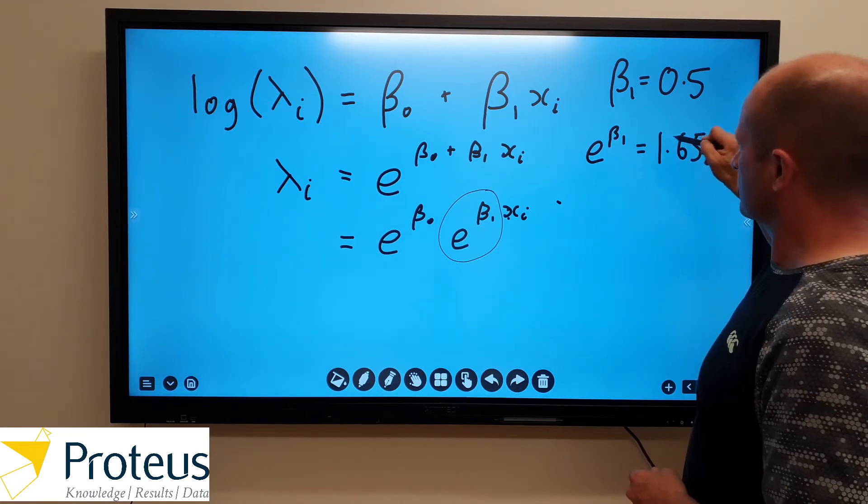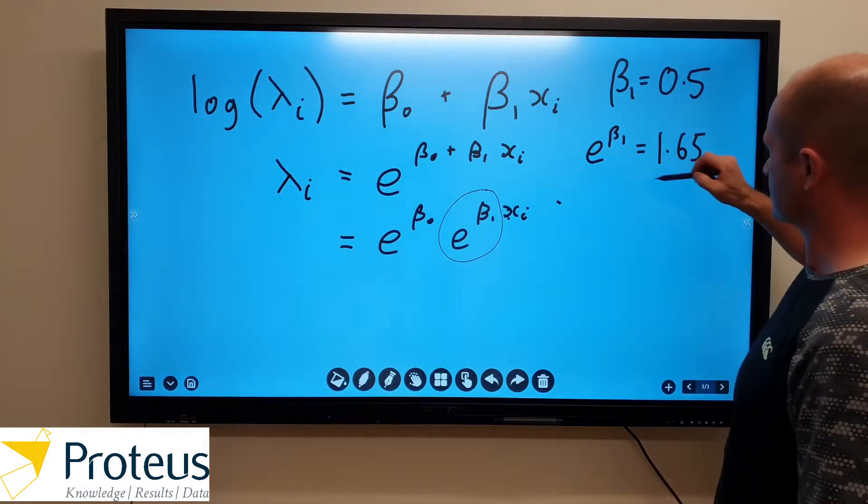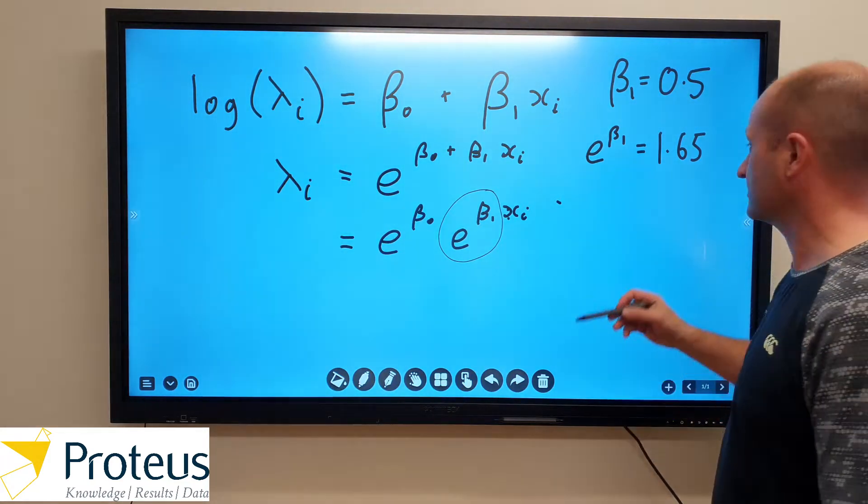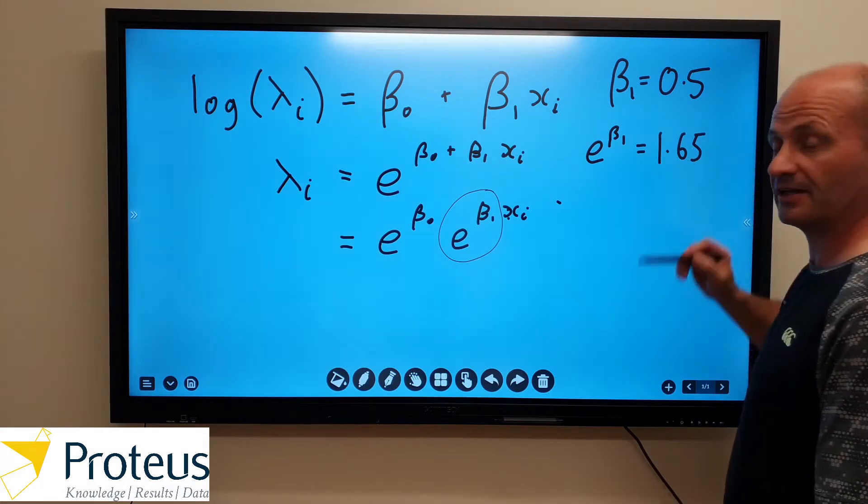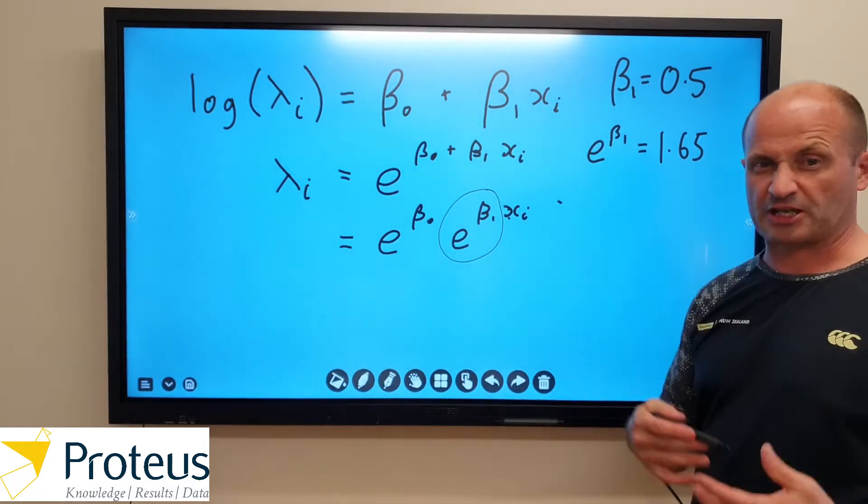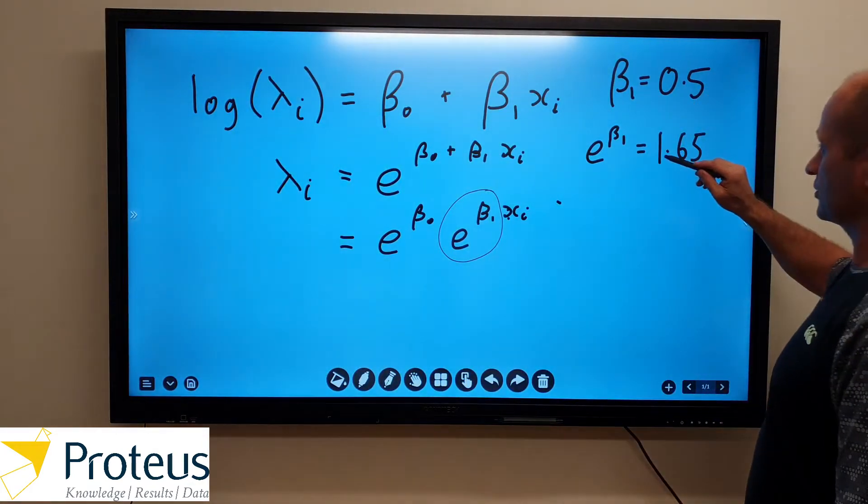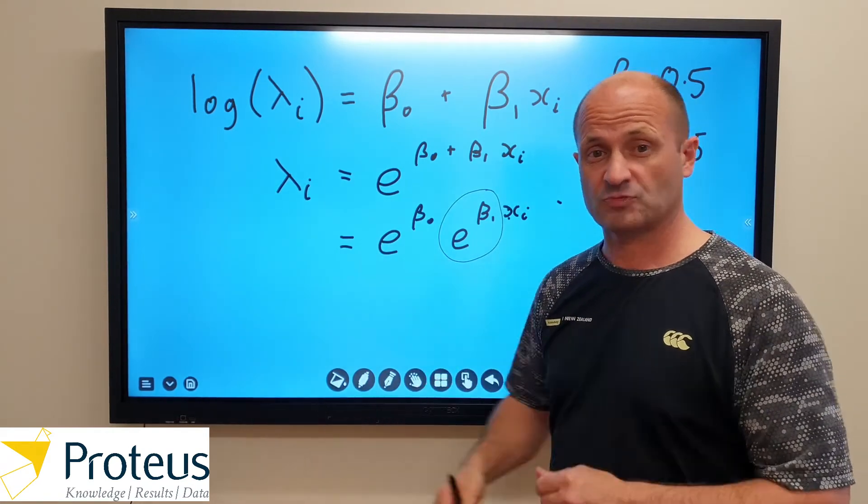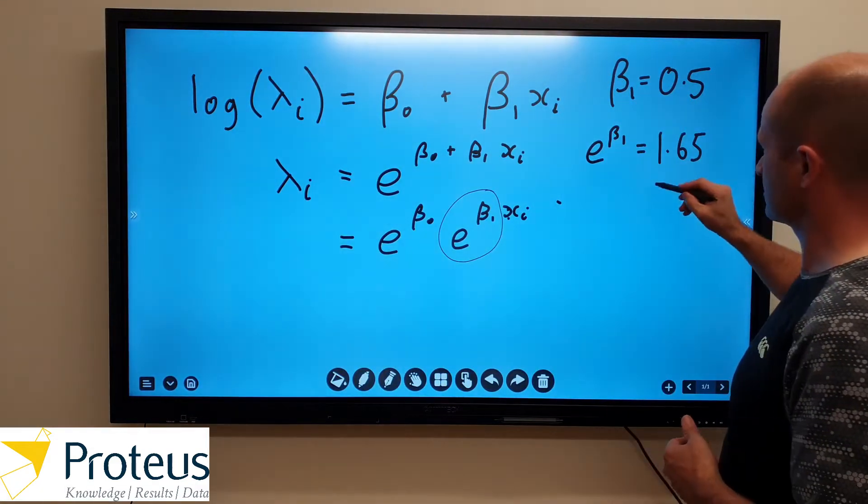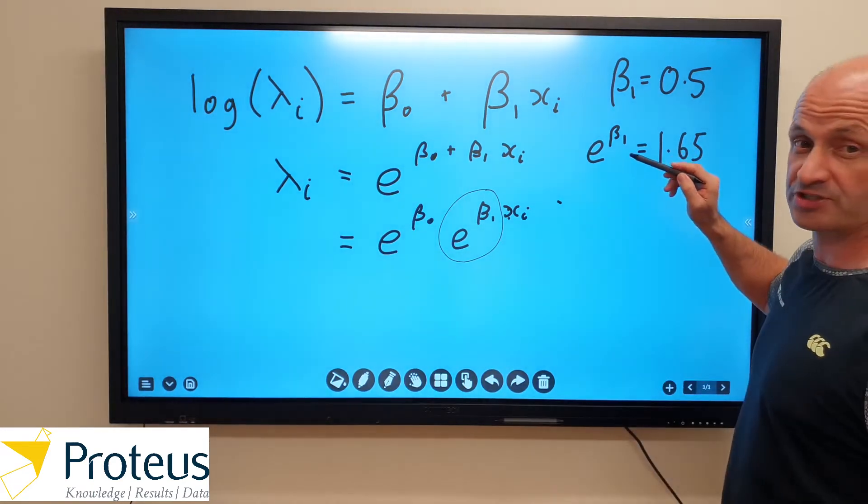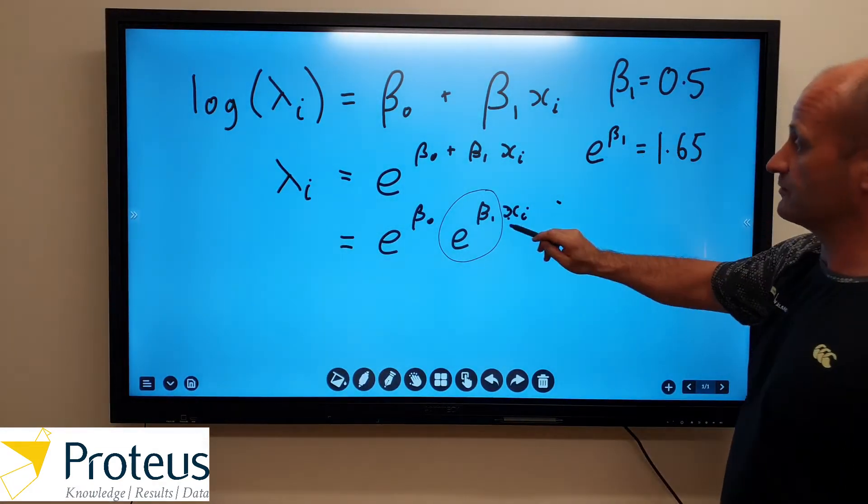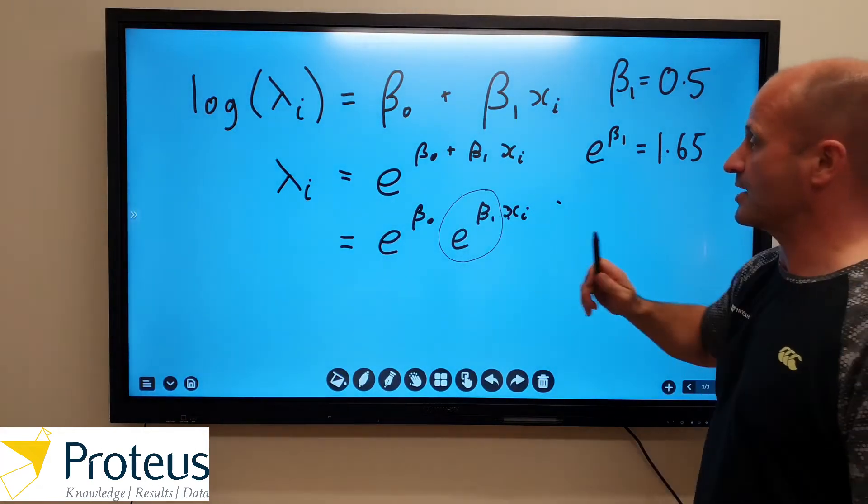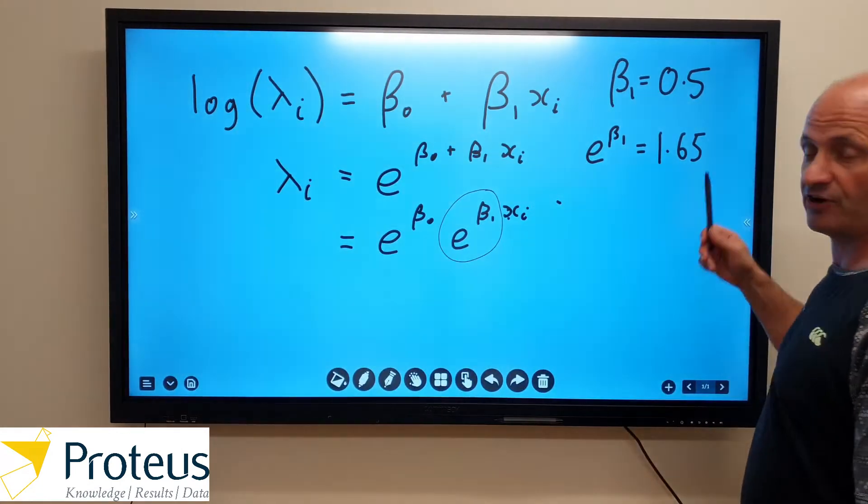And so we can interpret the effect of that covariate on this sort of scale here, and this is like a multiplicative scale. Another way of thinking about it is instead of just a straight multiplicative scaling factor, we can talk about it in terms of like a percentage increase. So if we look at this 1.65, that means it's 165 percent. So we could say that this is equivalent to saying, or another way of expressing this, is that for this covariate, for every time it increases by one unit, then our rate parameter will increase by another 65 percent.